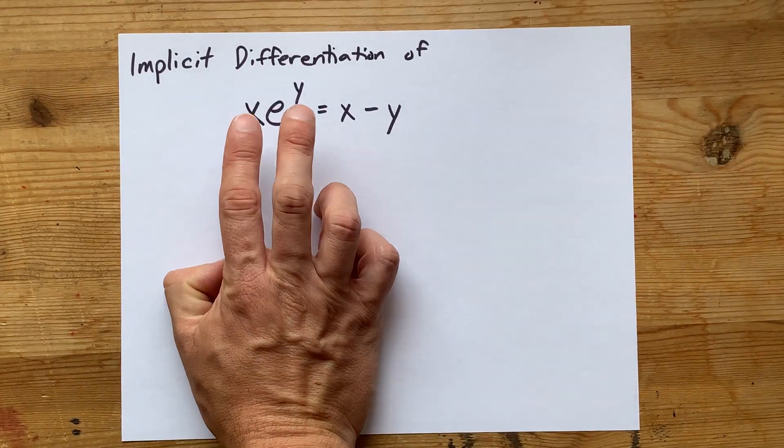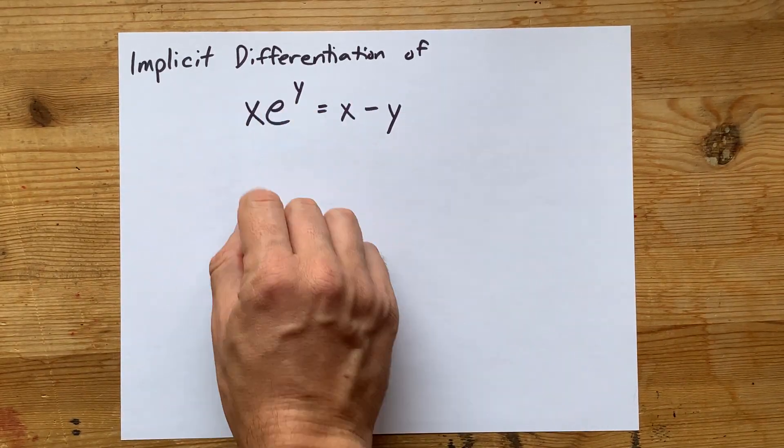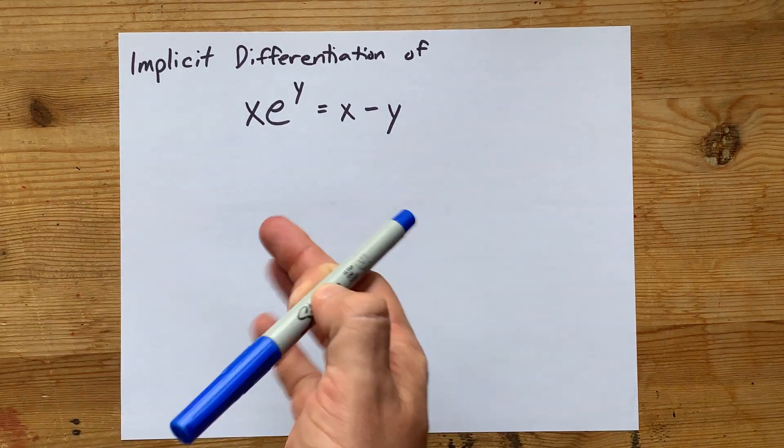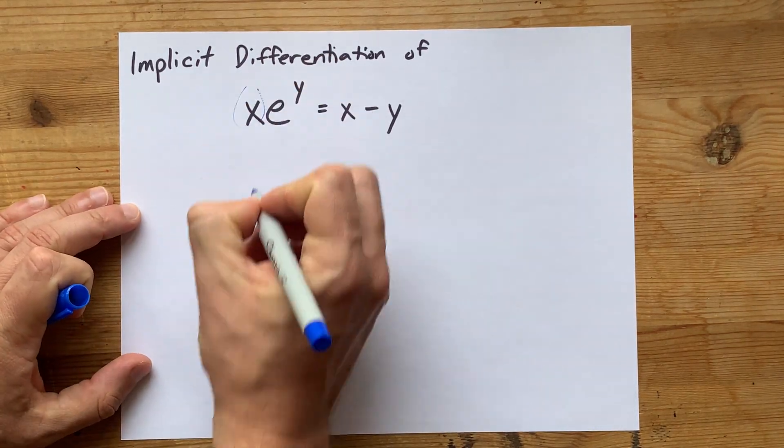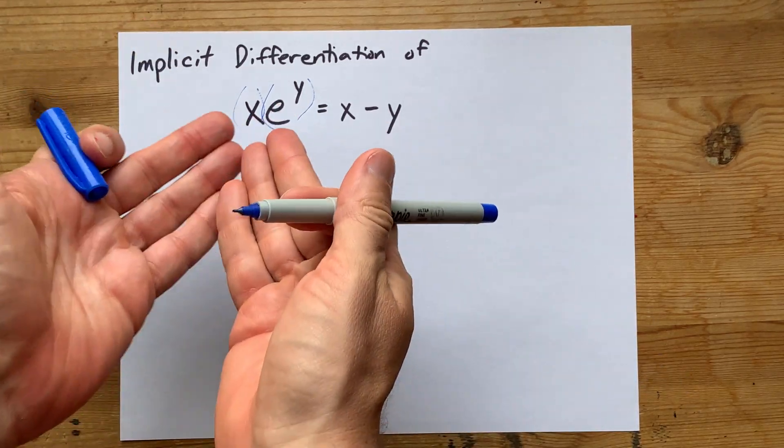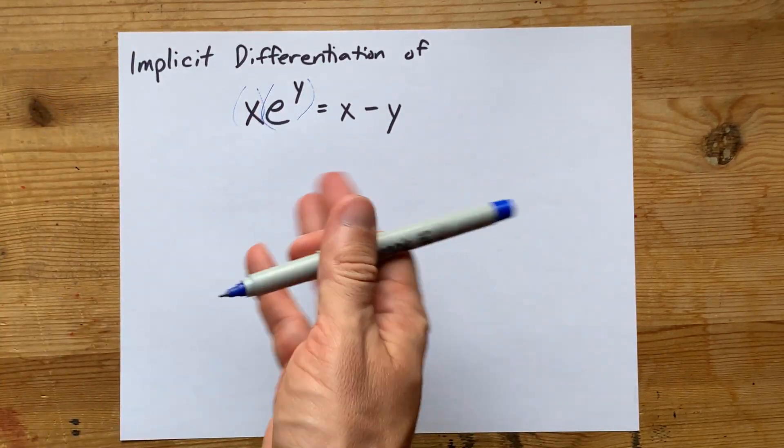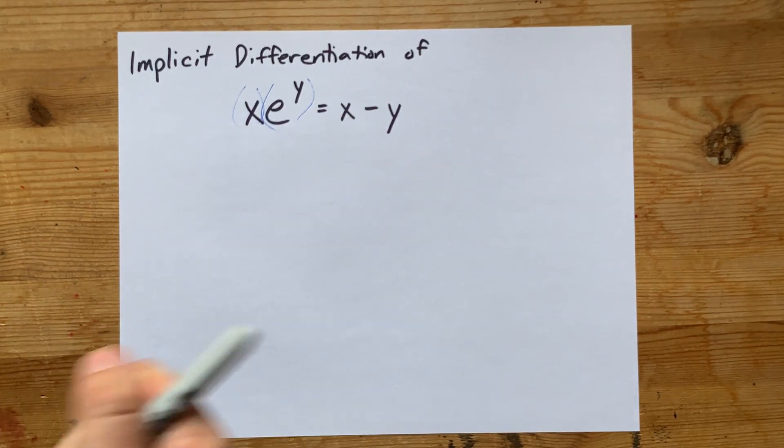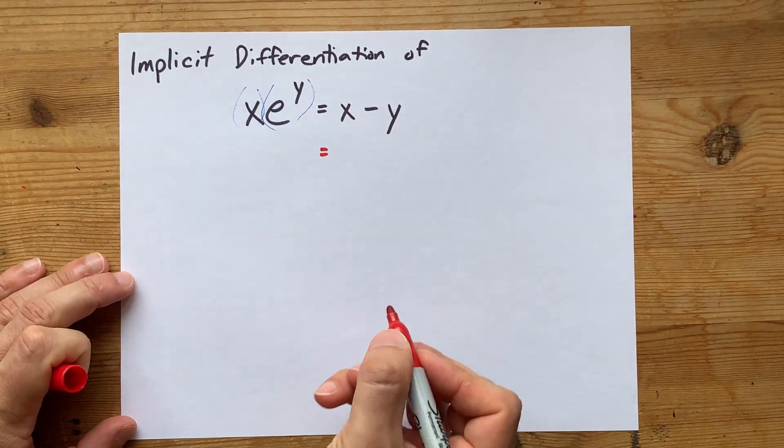Now, in order to take the derivative of the left-hand side, you have to identify that x itself is a function, and e to the y is another function. They're multiplied by each other, so you're going to need product rule to do that. I'm going to do that first, and then we'll come back to the other side here.